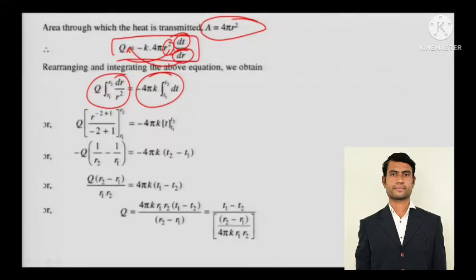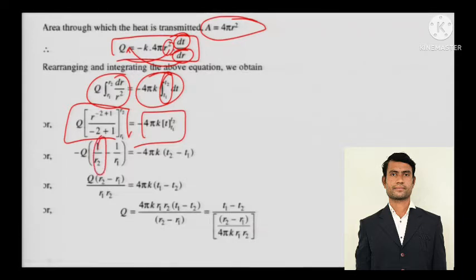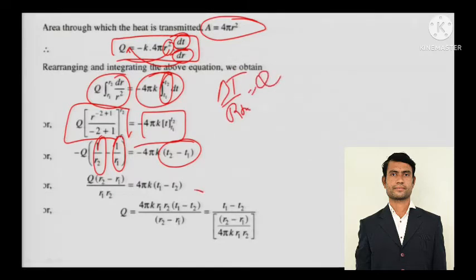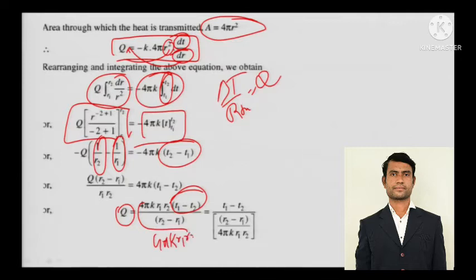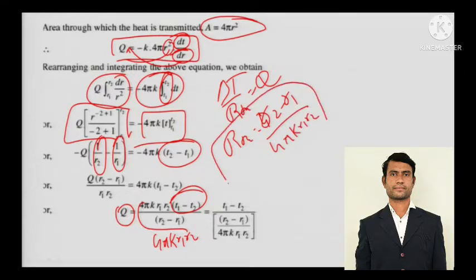Rearranging and integrating with limits r1 to r2 and T1 to T2, we get (1/r2 - 1/r1) on one side and 4πk(T2 - T1) on the other. Rearranging in the format Q = ΔT / R_th, we get R_th = (r2 - r1) / (4πk·r1·r2).